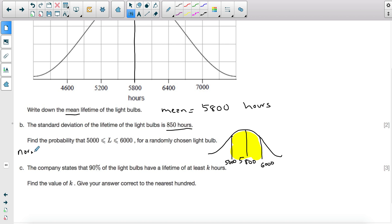And you just write normalCDF, your lower boundary, your lower number is 5,000. And then upper boundary is 6,000. Your mean is 5,800 and your standard deviation is 850. You plug this into the calculator and it should give you 0.420.